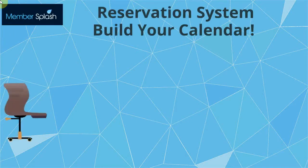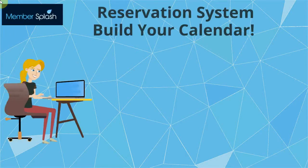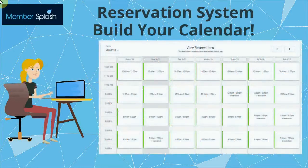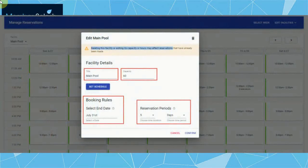You're in control of your calendar build. You decide which of your facilities will be made available, like the main pool or lap lanes. You decide the length of the reservation blocks for your pool, how many members are allowed to book a particular time slot, and how much time is required for cleaning or sanitizing between time slots.